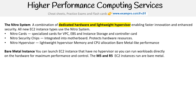Then we have bare metal instances. You can launch EC2 instances that have no hypervisor, so you can run workloads directly on the hardware for maximum performance and control. We have the m5 and r5 EC2 instances that can run bare metal.